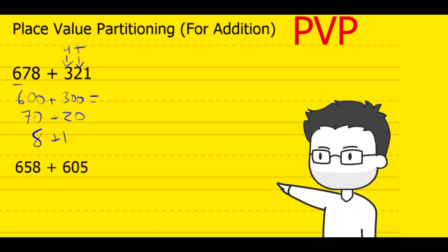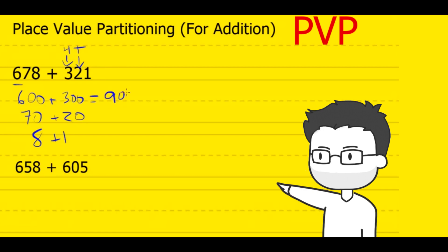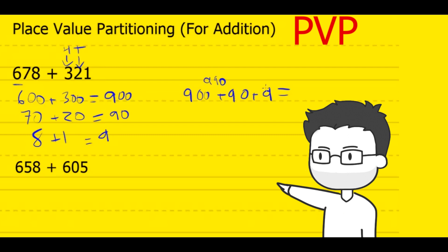So finally, we have to add the 100's with the 100's, the 10's with the 10's, and the 1's with the 1's. What's 600 plus 300? You get 900. 70 plus 20 equals 90, and 8 plus 1 equals 9. The final step is to recombine these place value parts. 900 plus 90 plus 9. Well, 900 plus 90 is 990, and then 990 plus 9 just gives us 999.